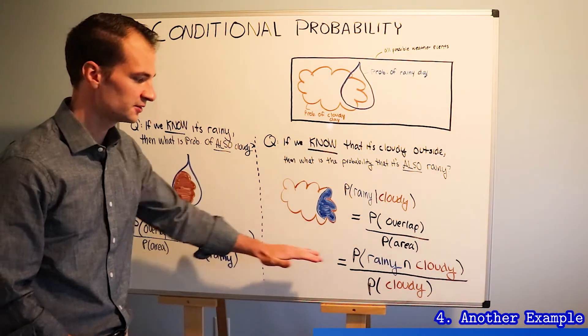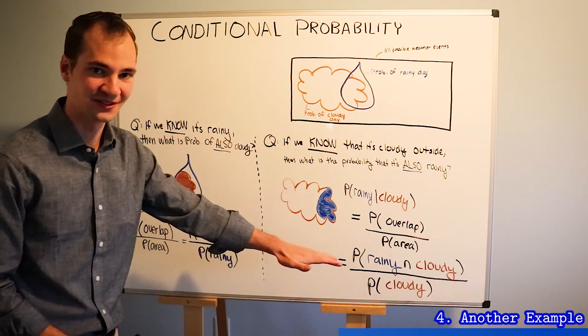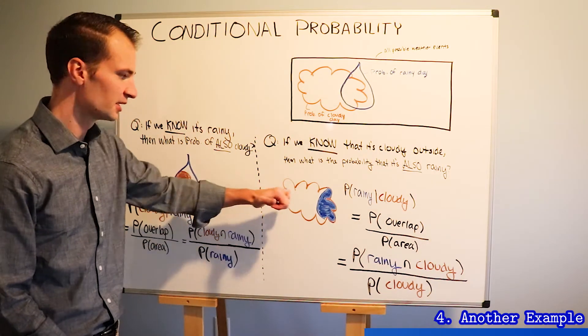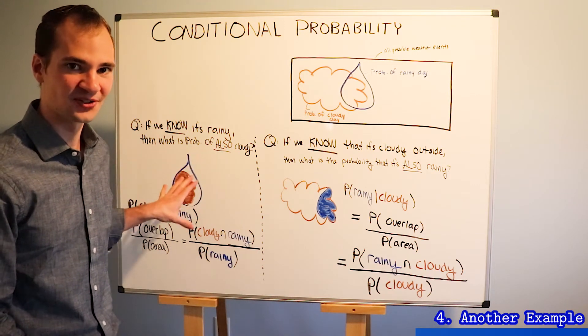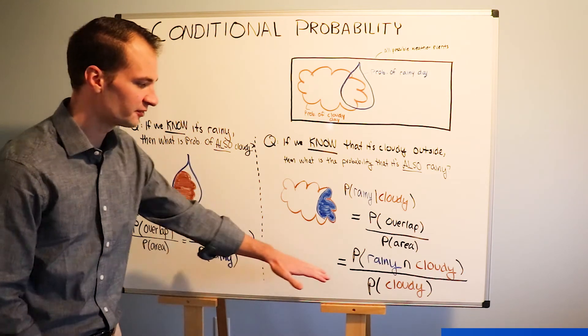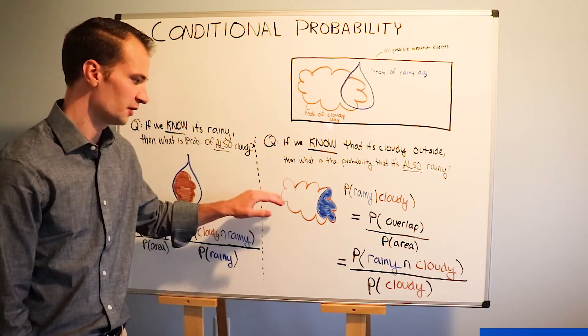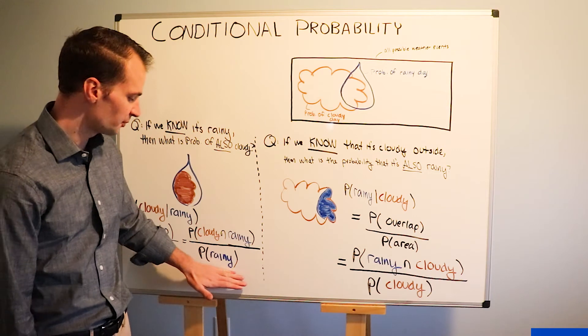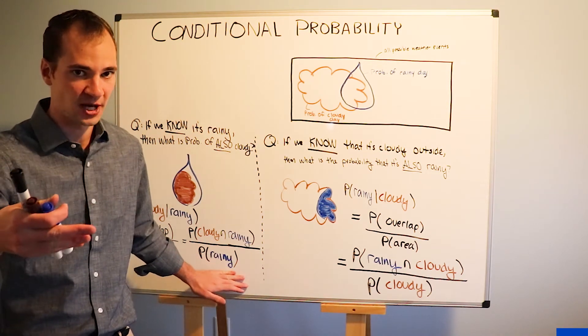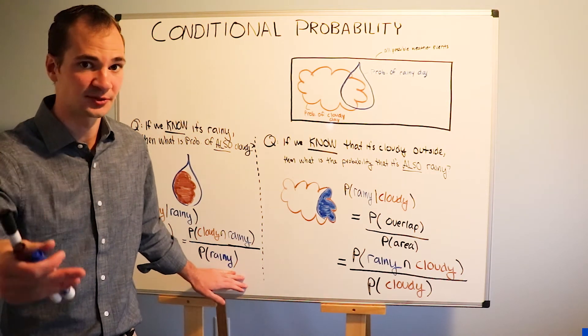Notice that our numerators in each case are identical. And that's because we're looking at the same shaded area. There are different colors in these two images, but they're actually the same shape. But we divide by a different area. Here we divide by the area of the cloud and here we divide by the area of the raindrop. So we divide by what we're given information about because that becomes the new sample space.